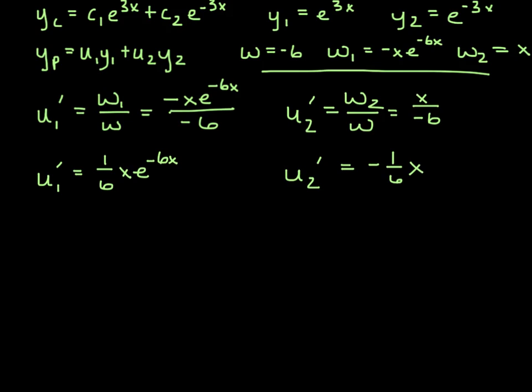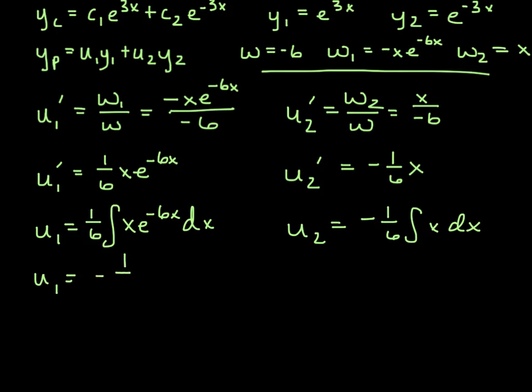And so to find out what u1 and u2 are, we need to actually integrate. So in other words, u1 is equal to 1 6th integral x e to the minus 6x dx. And so the one on the left here, we would do integration by parts, u2 we would just do straight away. So when we figure out u sub 1, we should get negative 1 over 36 x e to the minus 6x minus 1 over 216 e to the negative 6x. u2, that will be negative 1 over 12 x squared.